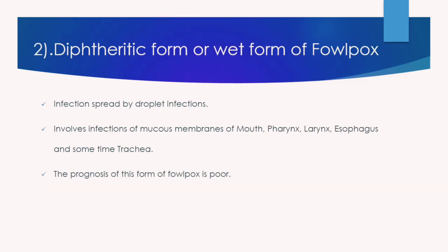The diphtheritic form, also called the wet form, spreads by aerosol or droplet infection. This form involves infection of the mucous membranes of the mouth, pharynx, larynx, esophagus, and sometimes the trachea.